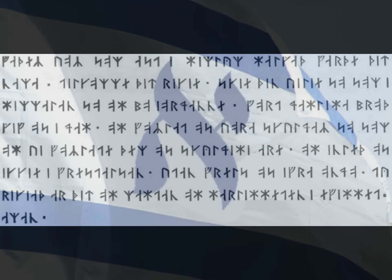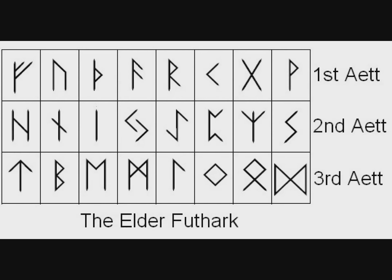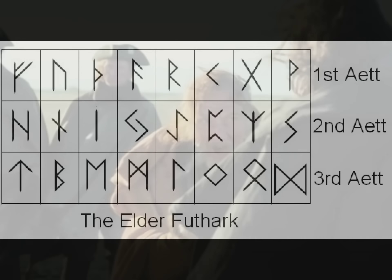The major runic alphabets, called Futharks, are the most well known. The Elder Futhark is thought to be the oldest version of the runic alphabet, and was used in the parts of Europe which were home to Germanic peoples, including Scandinavian.